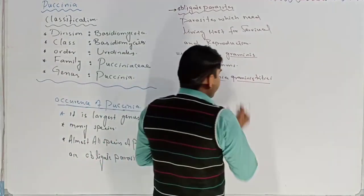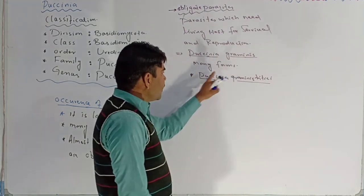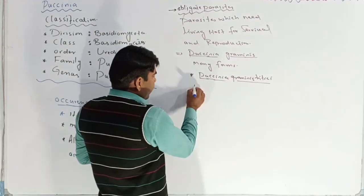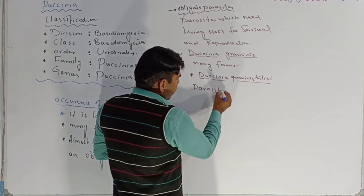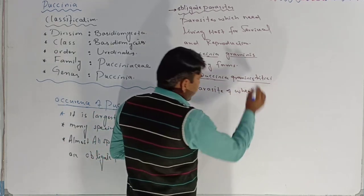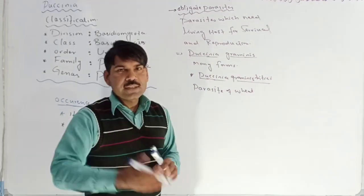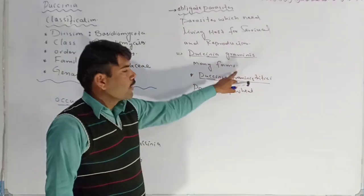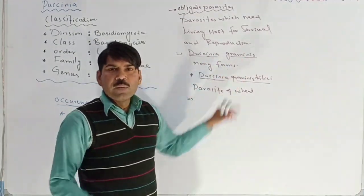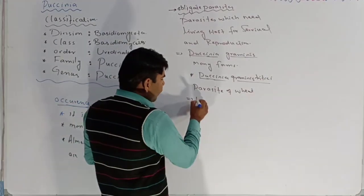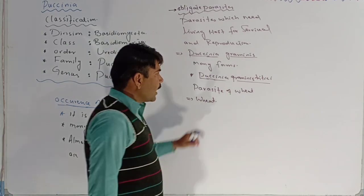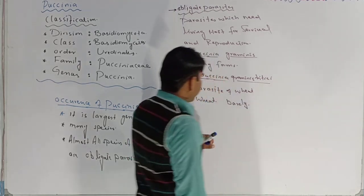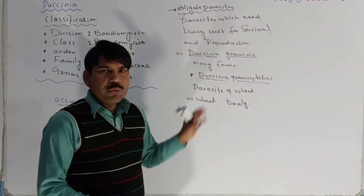Paksinia graminis tritici is a parasite of wheat. This species completes its life cycle in two hosts. The first host is wheat, and the second host of this form is Berberis. So it completes its life cycle into two hosts.